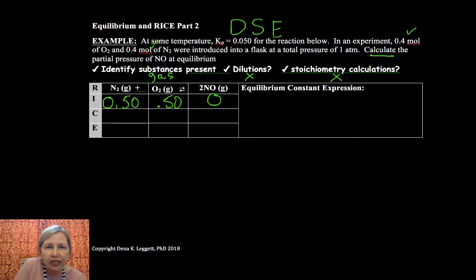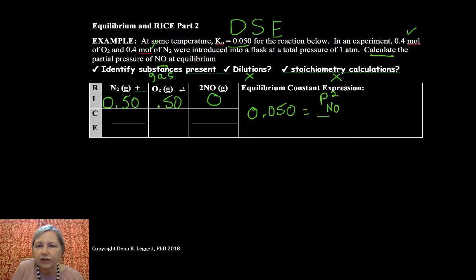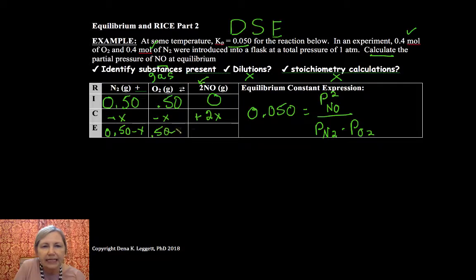The question says calculate NO at equilibrium and we're given Kp. So KP, I'm going to go ahead and set up that expression, is the partial pressure of nitrogen monoxide over nitrogen times oxygen. Now let's go ahead and fill out our RICE table. I have no choice but to make products. I'm going to lose X, lose X, gain 2X. Remember that 2 comes from that balancing coefficient.